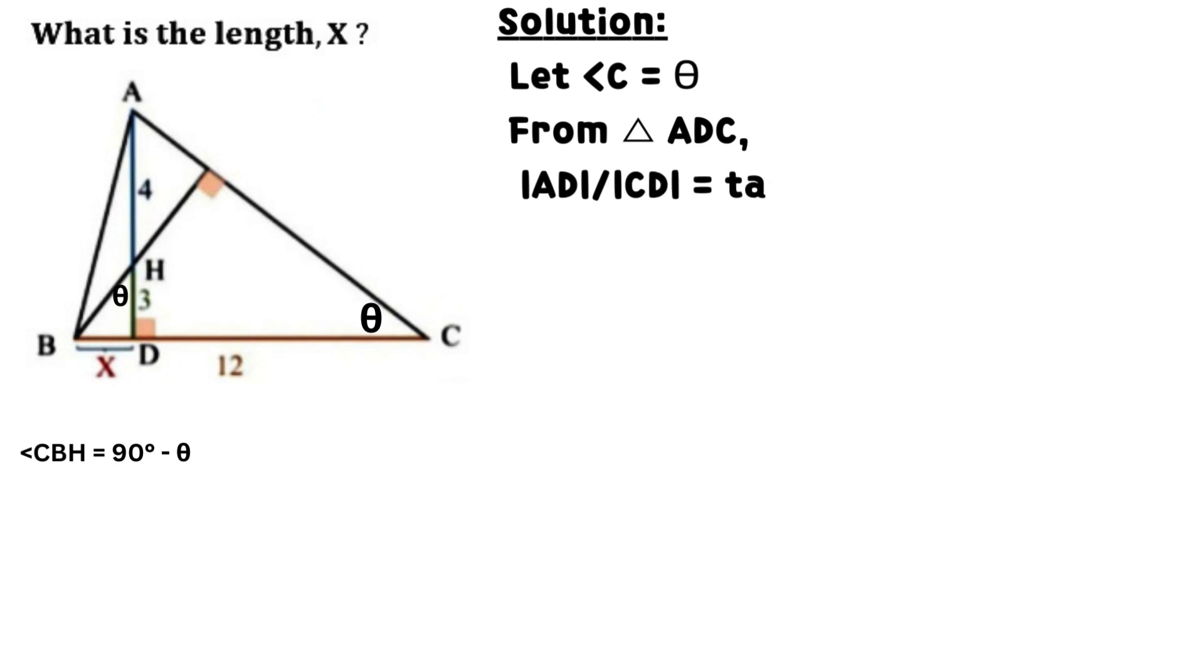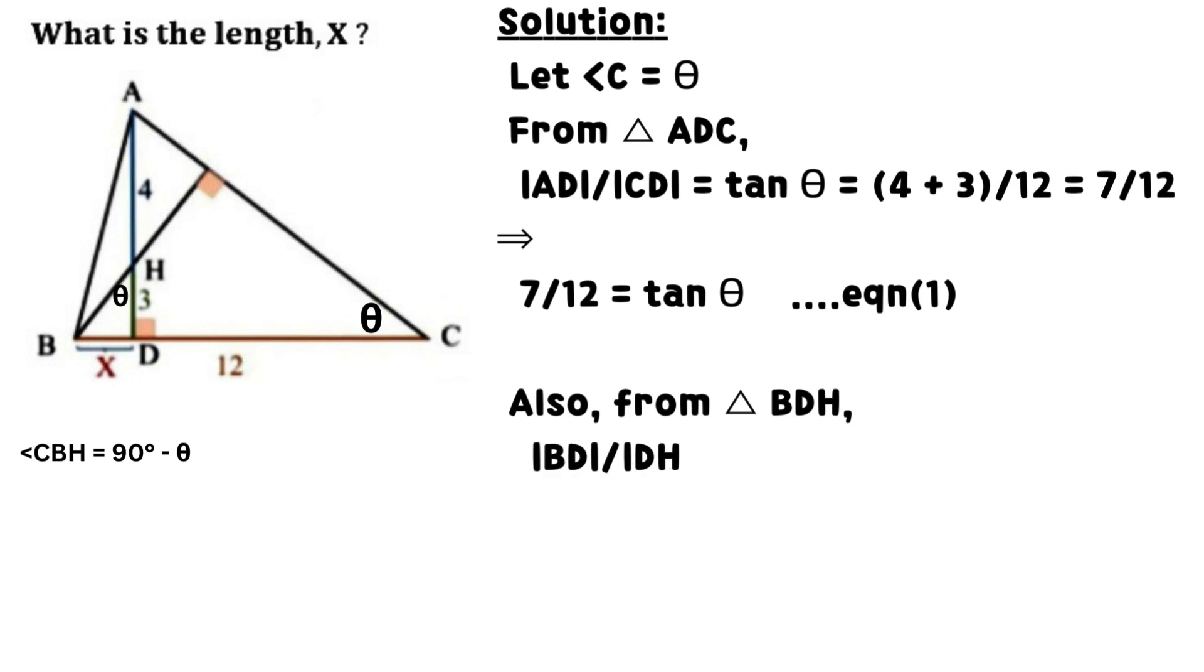Let angle C equals theta. From triangle ADC, line AD divided by line CD equals tan theta, which equals 7 divided by 12.